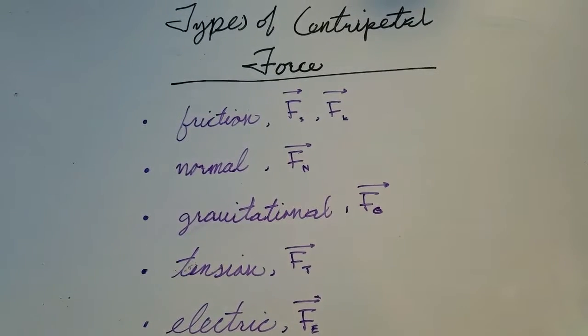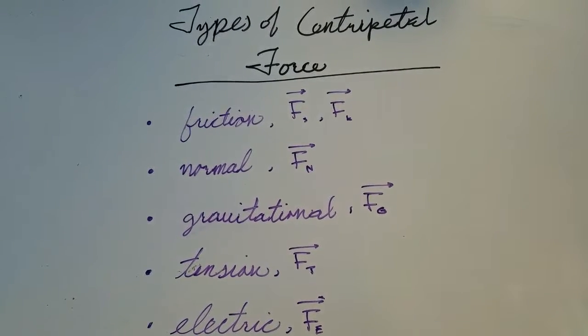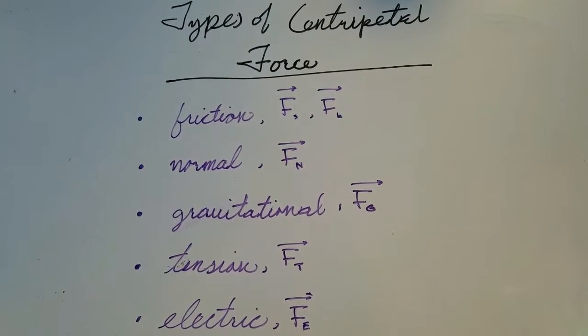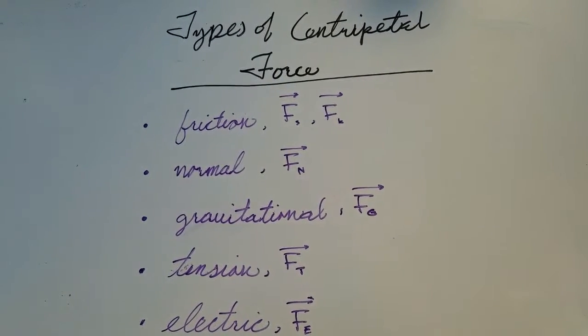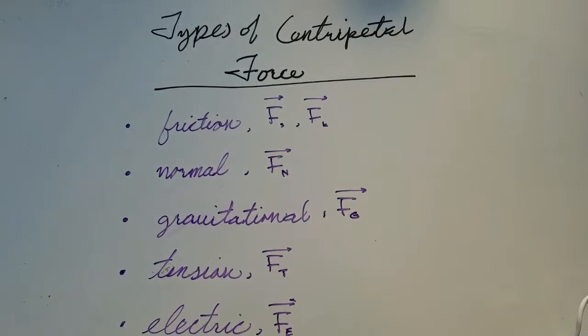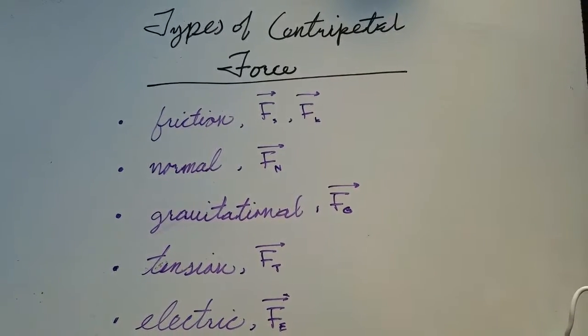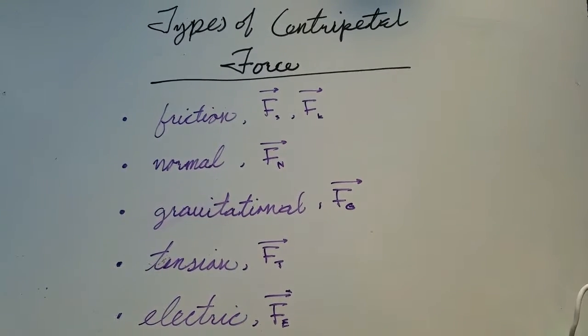Since we know that the centripetal force is going to be the force responsible for changing the particle's direction along its uniform circular trajectory, we need to take a look at what kind of forces can be centripetal forces. We know that an object in motion wants to travel in a straight line unless it's acted upon by an outside force, and a circle is not a straight line — which means that there is a force making it go in a circle.